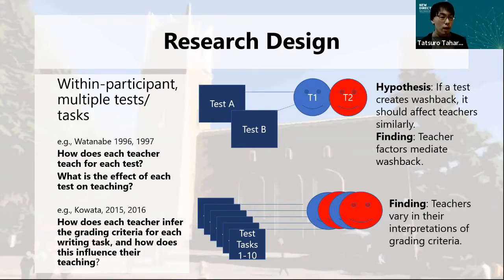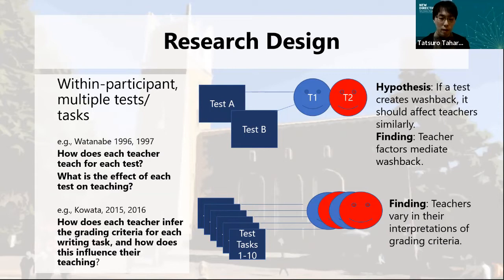For example, Watanabe included multiple teachers teaching for multiple tests that differ in content. He hypothesized that if a test creates washback, it should affect teachers similarly. A finding is that teacher factors mediate washback. Also, Kawata investigated various teachers' perceptions of tests. The finding is that teachers vary in their interpretations of grading criteria.